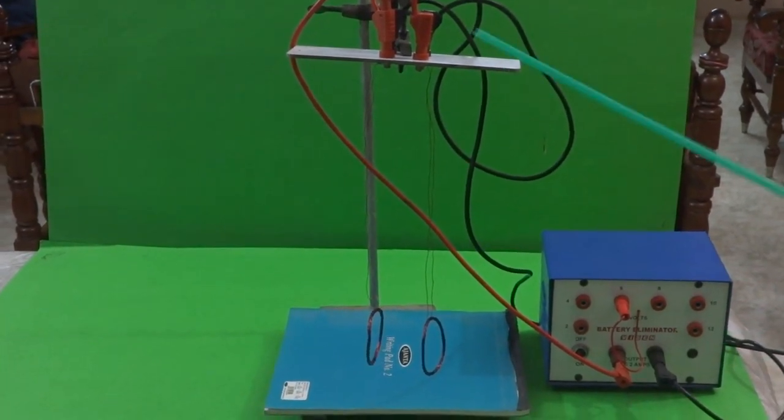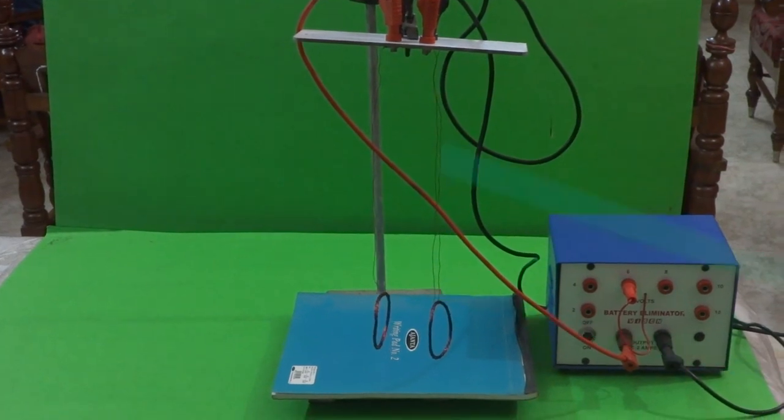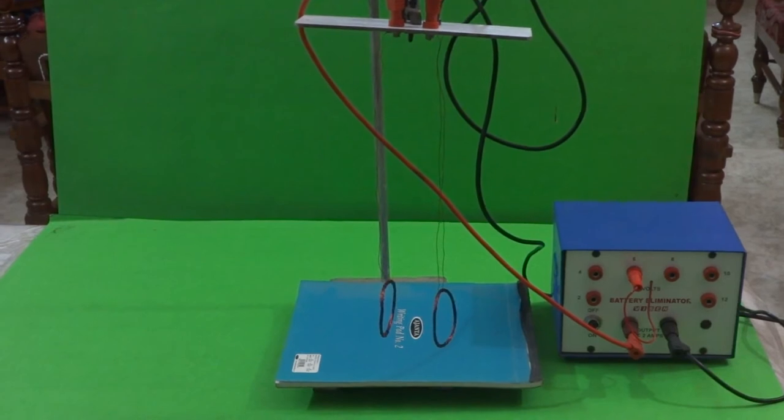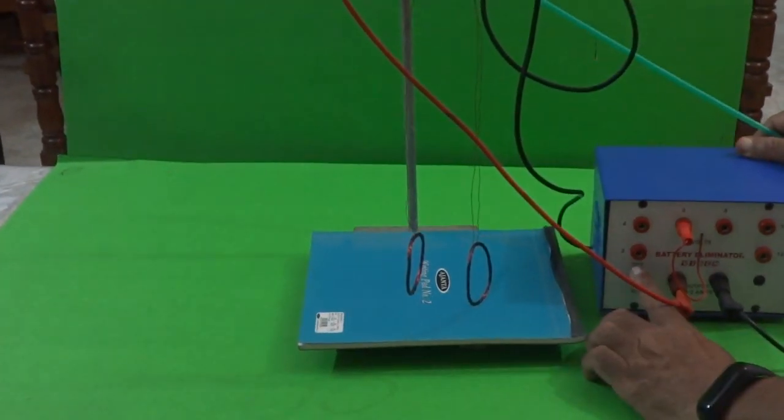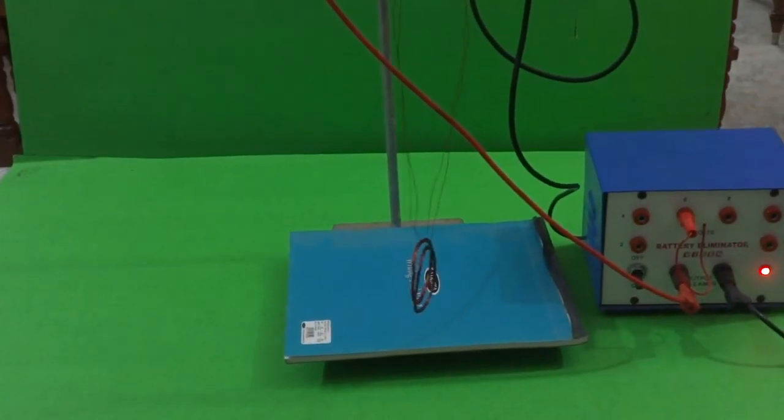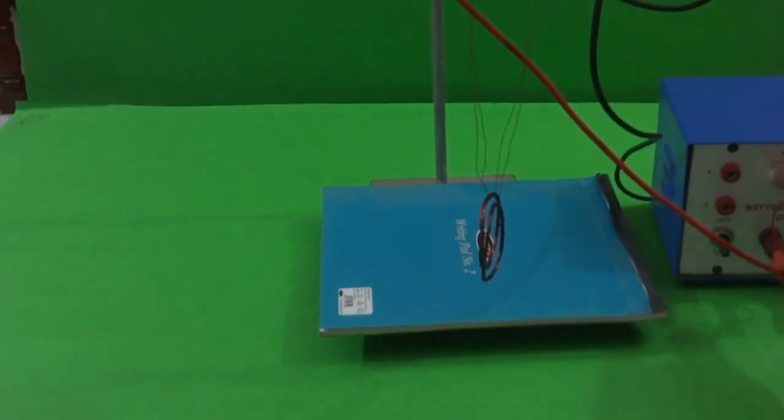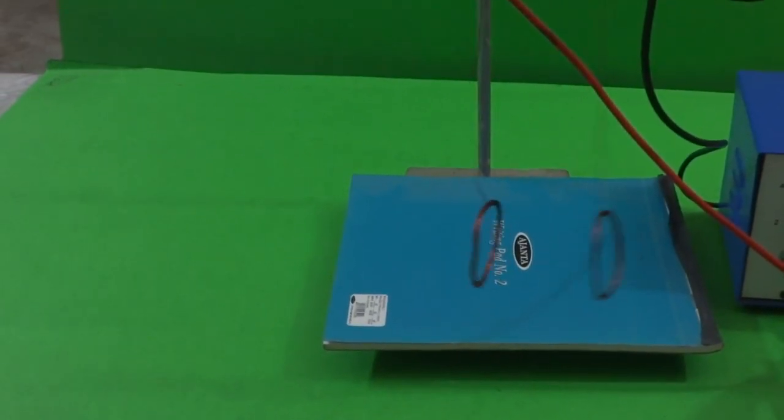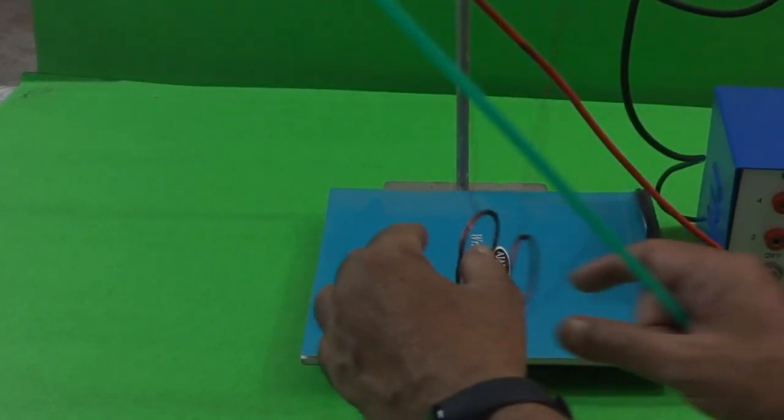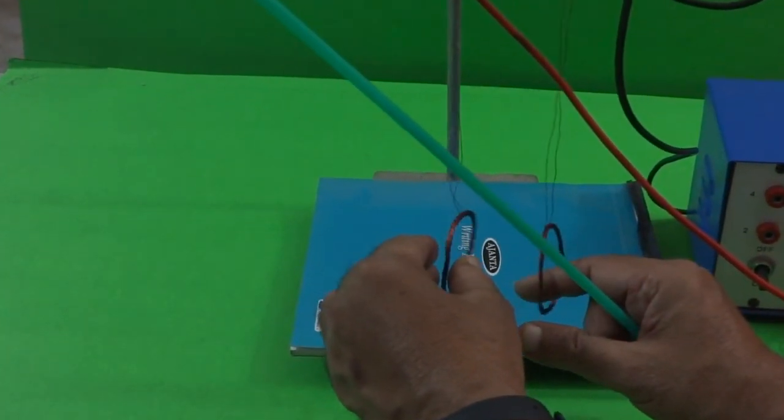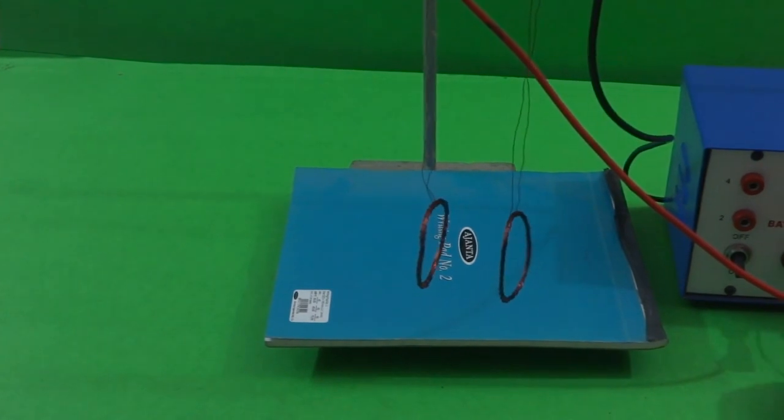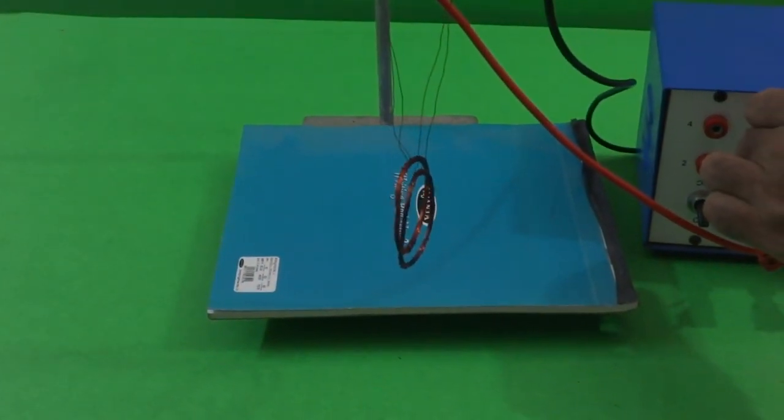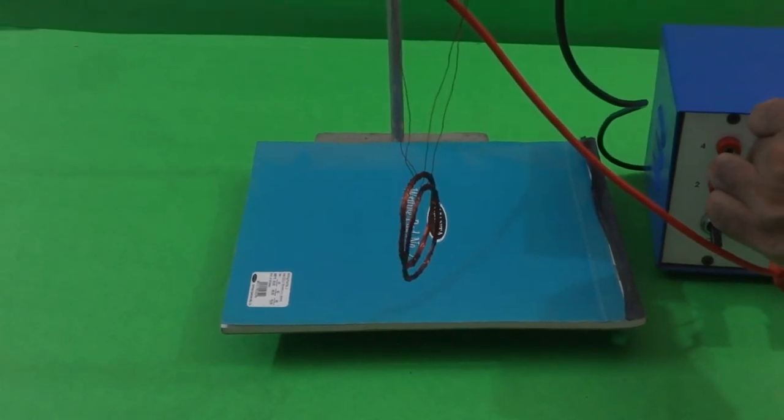When I switch on, the current starts passing through these two coils in the same direction. Now, let's see what happens to the coils. They are attracted. Let's see once again. They are attracting each other.